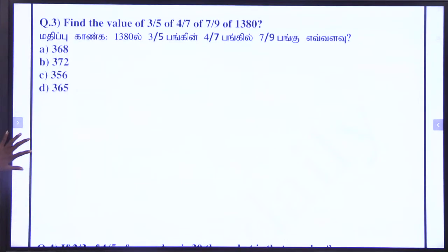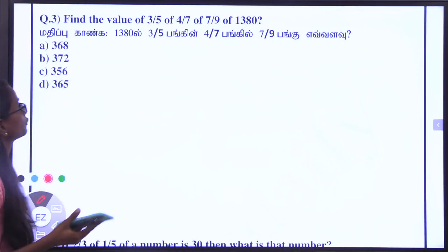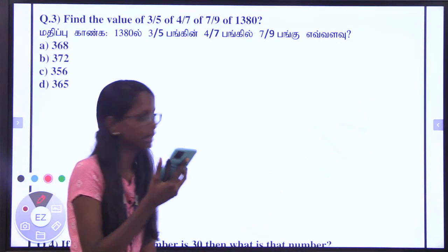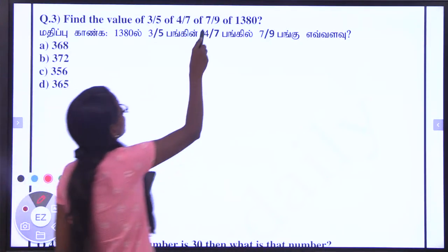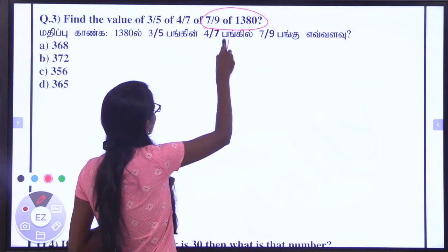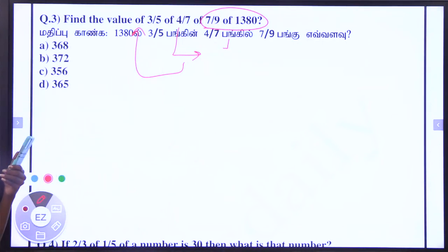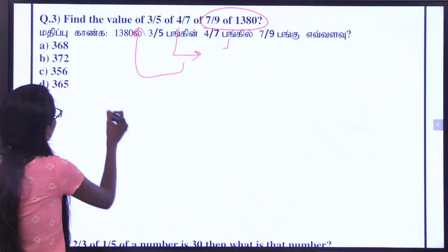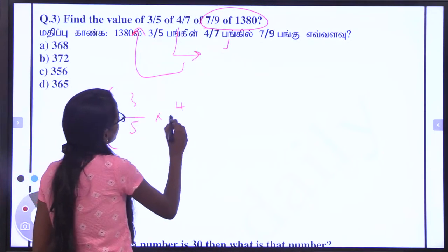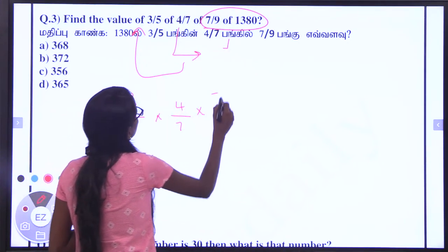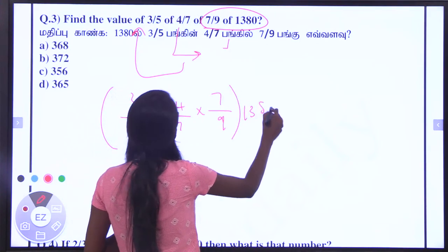What is the value of 3 divided by 5 of 4 divided by 7 of 7 divided by 9 of 1380? Total value of 3/5 into 4/7 into 7/9 into 1380.